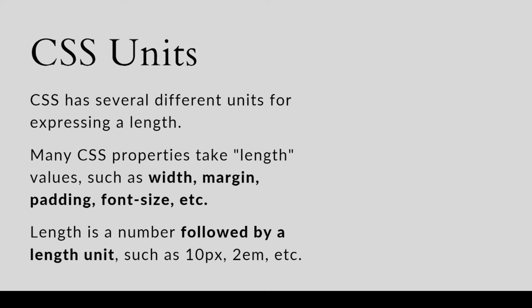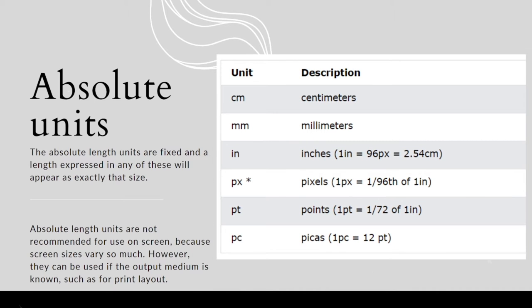Let's see what are the two different types of CSS Units. The first one is Absolute Units: centimeter, millimeter, inches, pixel, point, and pica are some of the absolute units.